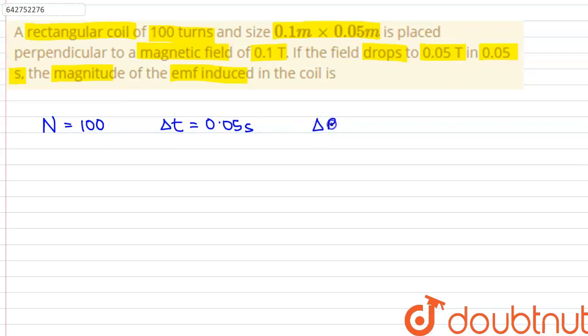The change in value of magnetic field is equals to 0.1 minus 0.05, and this is equals to 0.05 tesla. And the area of the coil is equals to 0.1 into 0.05, which is equals to 5 into 10 to the power minus 3 meter squared.